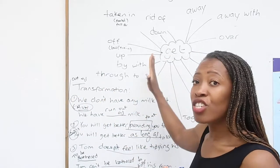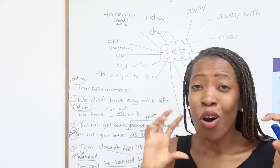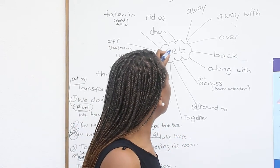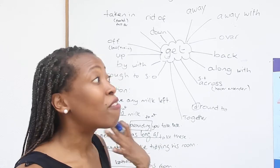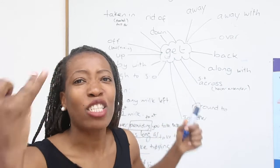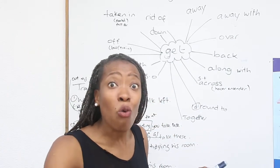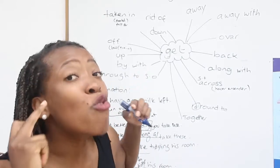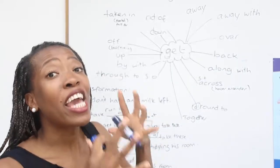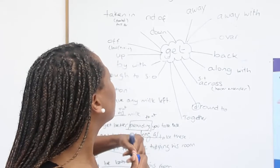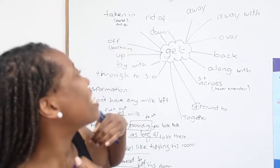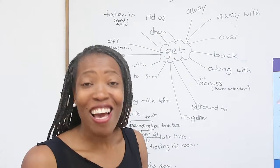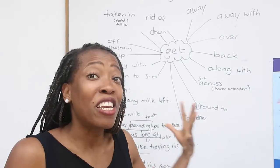Now this is the way I normally teach phrasal verbs. I normally focus on one word per session. And so for today, the word that I'm focusing on is get. We have a lot of phrasal expressions, phrasal verbs with get. We have get away, get away with, get back, get along with, get on, get around to, get together, get through to someone, get by with, get up, get off, get taken in, get down, get rid of.